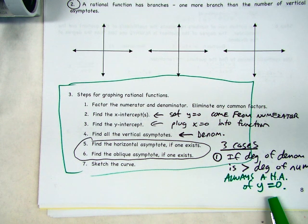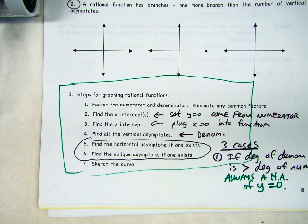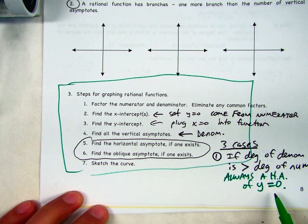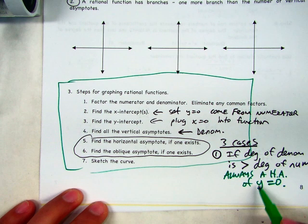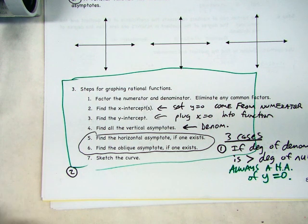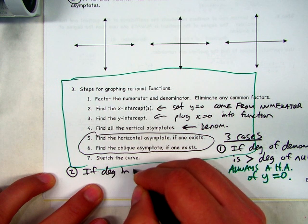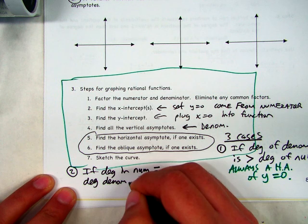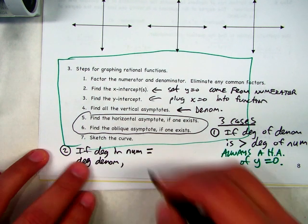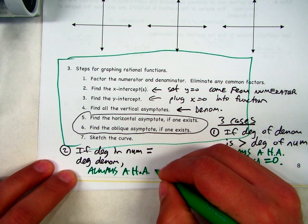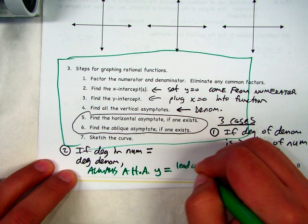That's actually easy to understand: if you have a linear function on top and a quadratic on the bottom, when x gets really big, the stuff on the bottom is going to be a lot bigger than the stuff on the top. So essentially you're going to get fractions close to 0, and as we get close to infinity, the function will get really close to 0. Second case: if the degree in the numerator equals the degree in the denominator, then there's always a horizontal asymptote and the equation is y equals lead coefficient over lead coefficient.